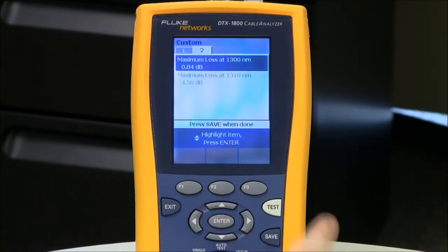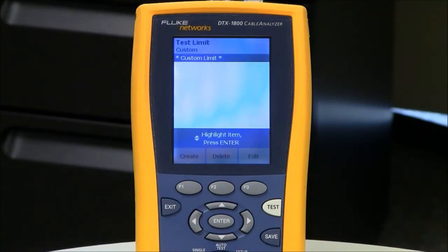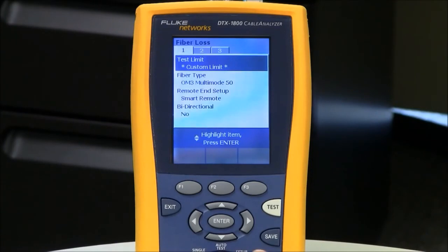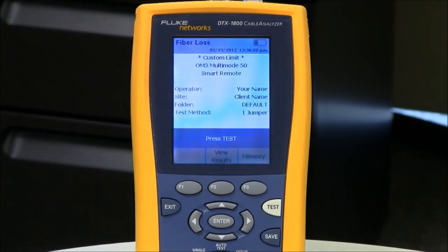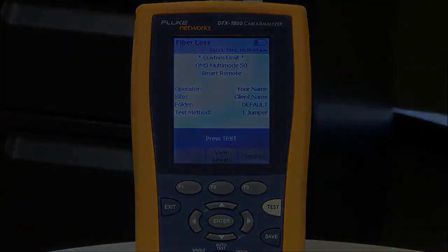Save. Now I hit Save to store it. There is my custom test limit. Hit Enter to select it. Rotate the dial to auto-test. And that is how you create a custom fixed loss limit.